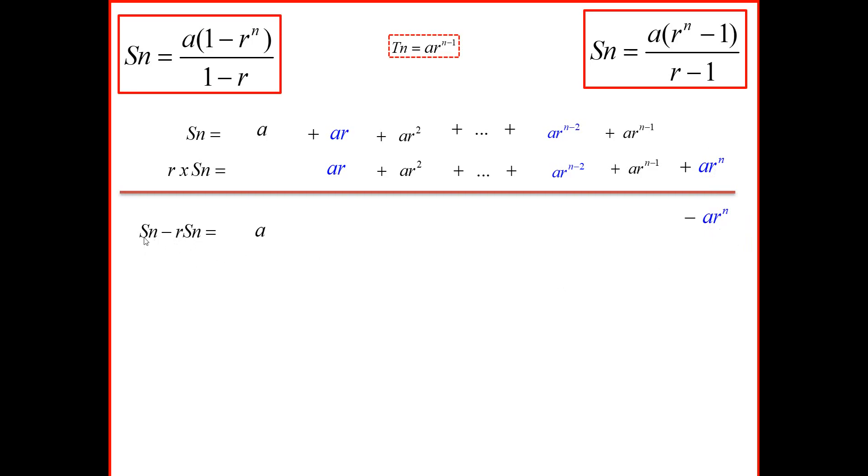We're going to pull out a common factor. Here we have Sn. If we pull out a common factor, we're going to be left with (1 minus r). Pulling out a common factor on the right hand side will be a. We have (1 minus r to the power n). We're now going to divide both sides by (1 minus r) to find Sn. And that will give us a times (1 minus r to the power n) divided by (1 minus r). And we've proved our first formula.